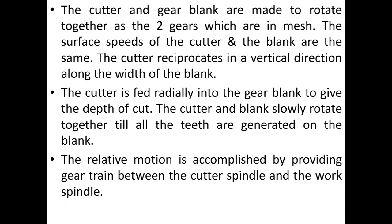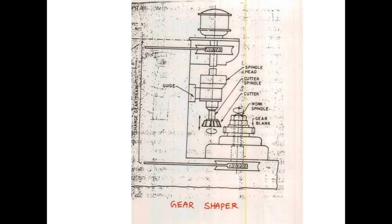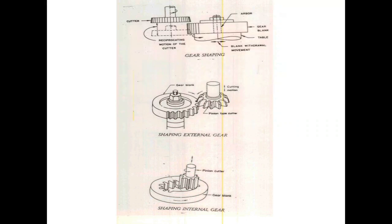The cutter and blank slowly rotate together until all the edges of the teeth are generated on the blank. The relative motion is accomplished by providing a gear train between the cutter spindle and the work spindle. The gear shaper diagram shows the spindle head, cutter spindle, work spindle, gear blank, and guide.